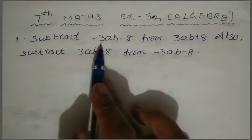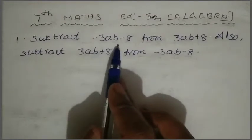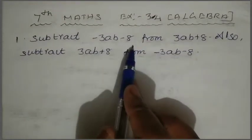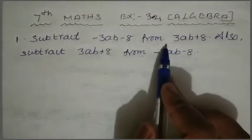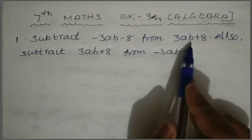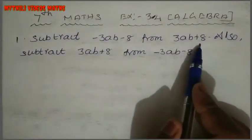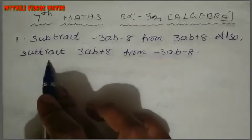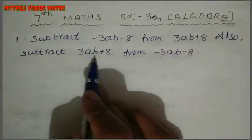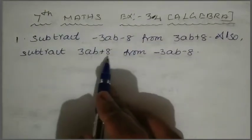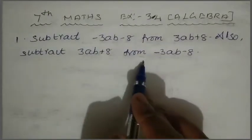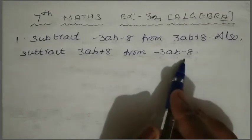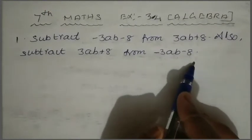So the first problem: subtract minus 3AB minus 8 from 3AB plus 8. Also subtract 3AB plus 8 from minus 3AB minus 8.